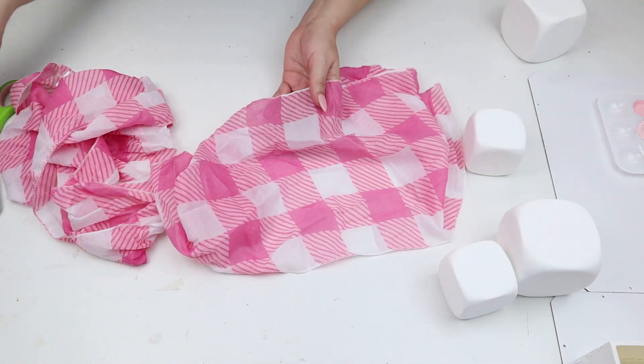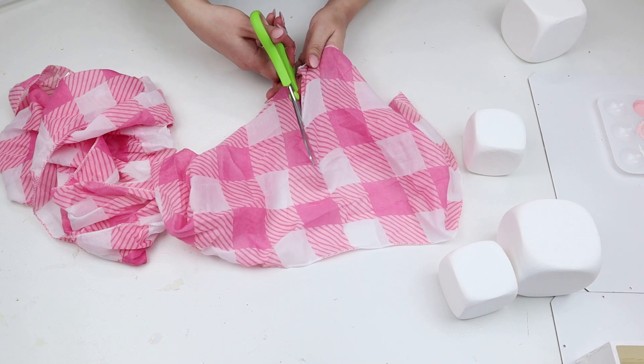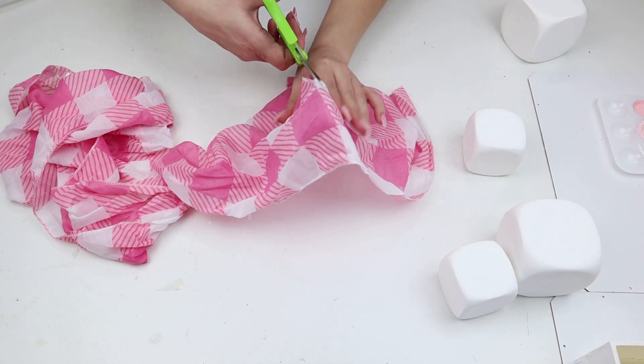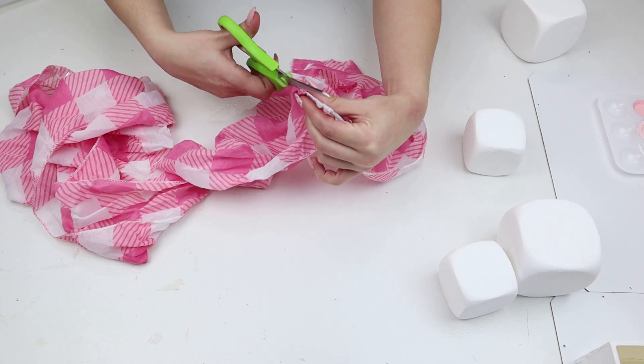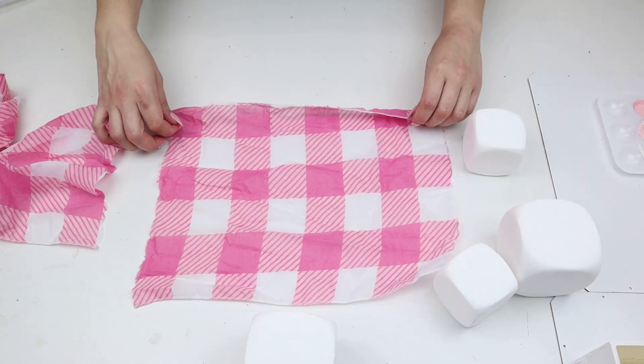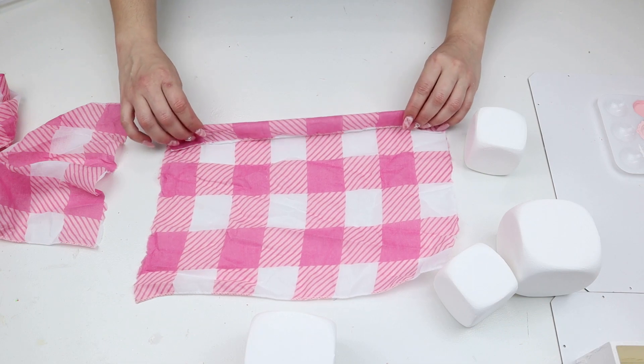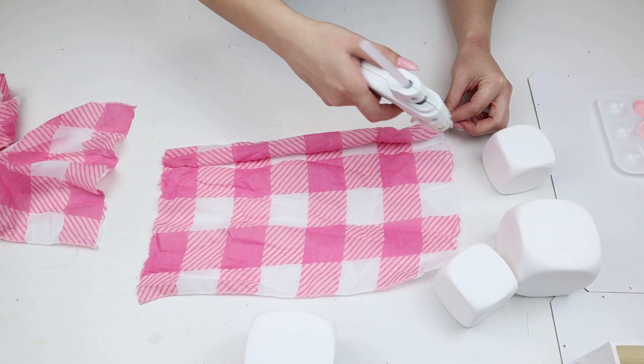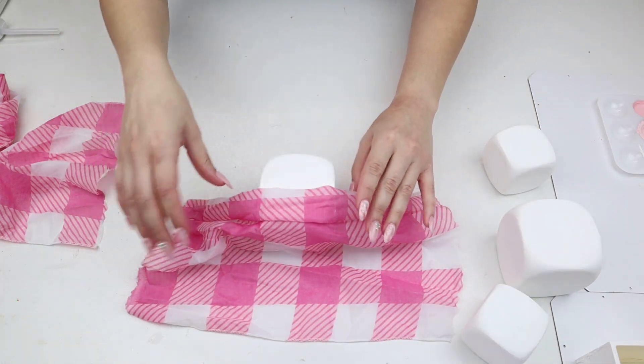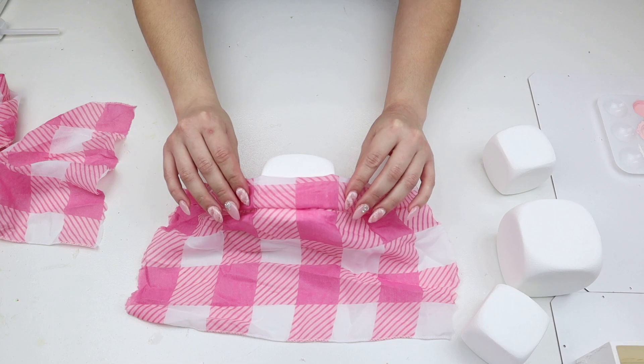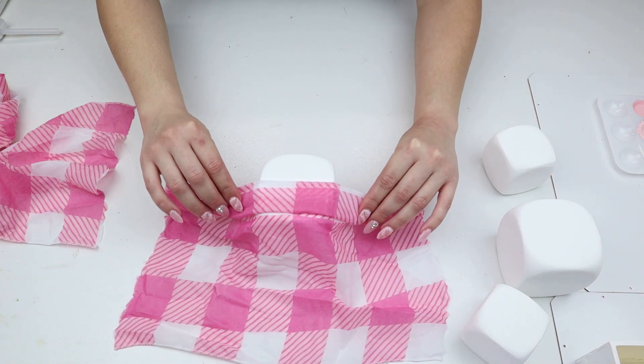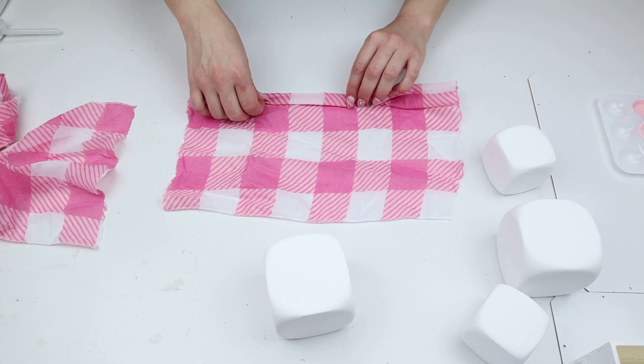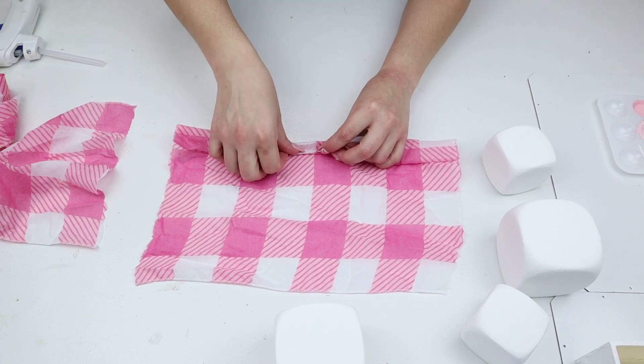For the big ones I counted eight squares and then for the smaller one I counted six squares, but you can do what you feel is right. The way I wanted to overlap it, eight squares perfectly went around the big one and six squares perfectly went around the small one. To give the look of a winter hat I took the ends and rolled them up and glued them down so it has that rim that most winter hats have. Then I laid that folded part onto the top of the dice so I can see where I want it lined up. Once I did that I saw it was a little too thick, so I rolled it up one more time and glued it down and then used hot glue to attach it to the top of the dice as well.